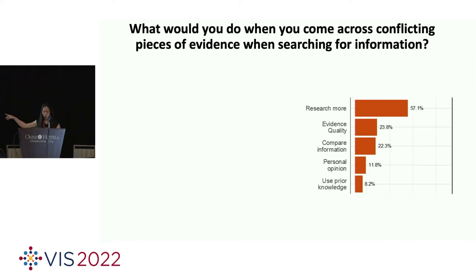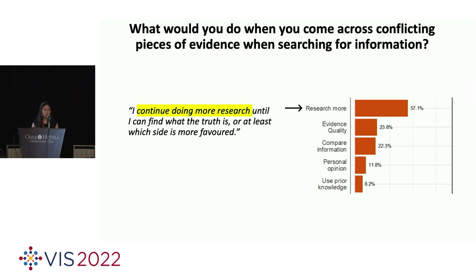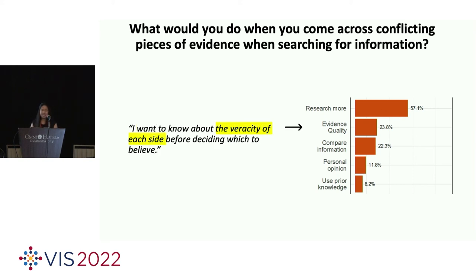So, we conducted a survey asking crowd workers what they would do when they come across conflicting pieces of information. And this is what we found. Note that one person could fall into multiple categories. So, most people will keep searching. So, this one participant wrote, I continue doing more research until I can find what the truth is or at least which side is more favored. Some will evaluate the quality of the evidence they find.